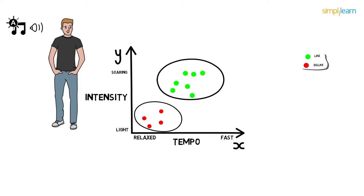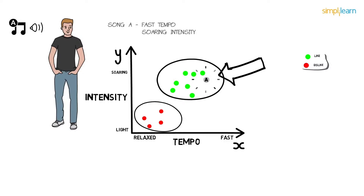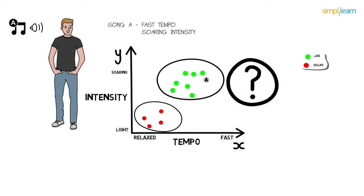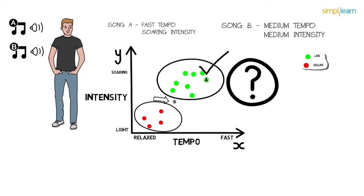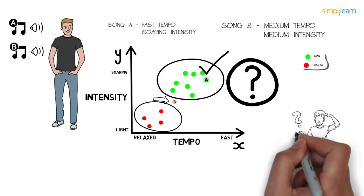Now Paul listens to a new song — Song A — which has fast tempo and soaring intensity. By looking at Paul's past choices, we can classify it easily: Paul likes this song. But then Paul listens to Song B, which has medium tempo and medium intensity — neither relaxed nor fast, neither light nor soaring. It's hard to guess whether Paul will like it or not.